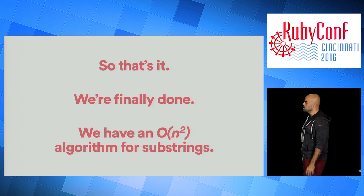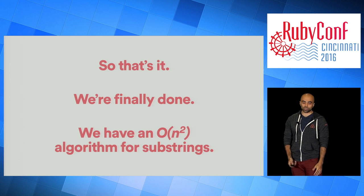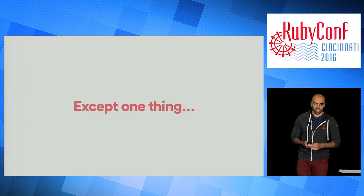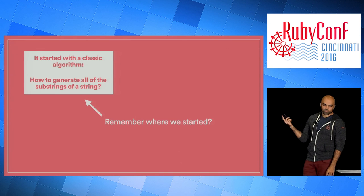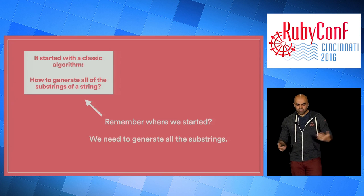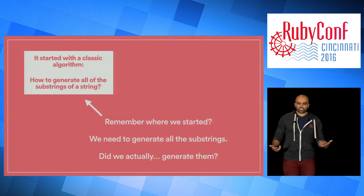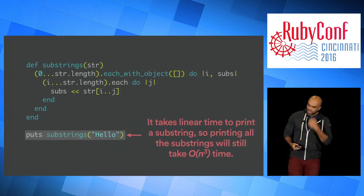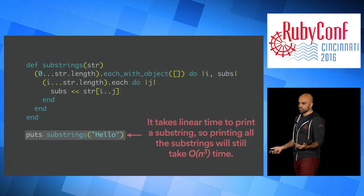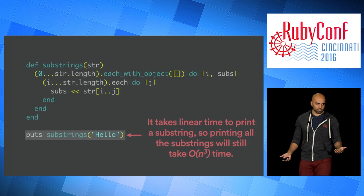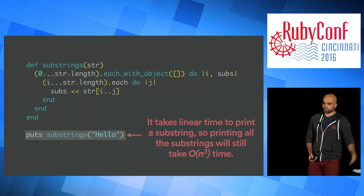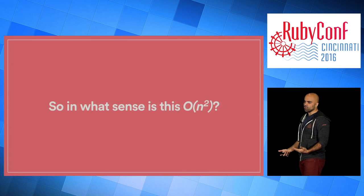Mystery solved. We now have an O(n²) algorithm for substrings — except for one problem. If you want to actually print or serialize all those substrings, each one takes linear time to print, there are O(n²) of them, and each is linear in the original string length — so printing or sending them all still takes cubic time. In what sense is this algorithm actually O(n²)? The whole idea of copy-on-write is a kind of laziness — it doesn't do the copy until it has to.